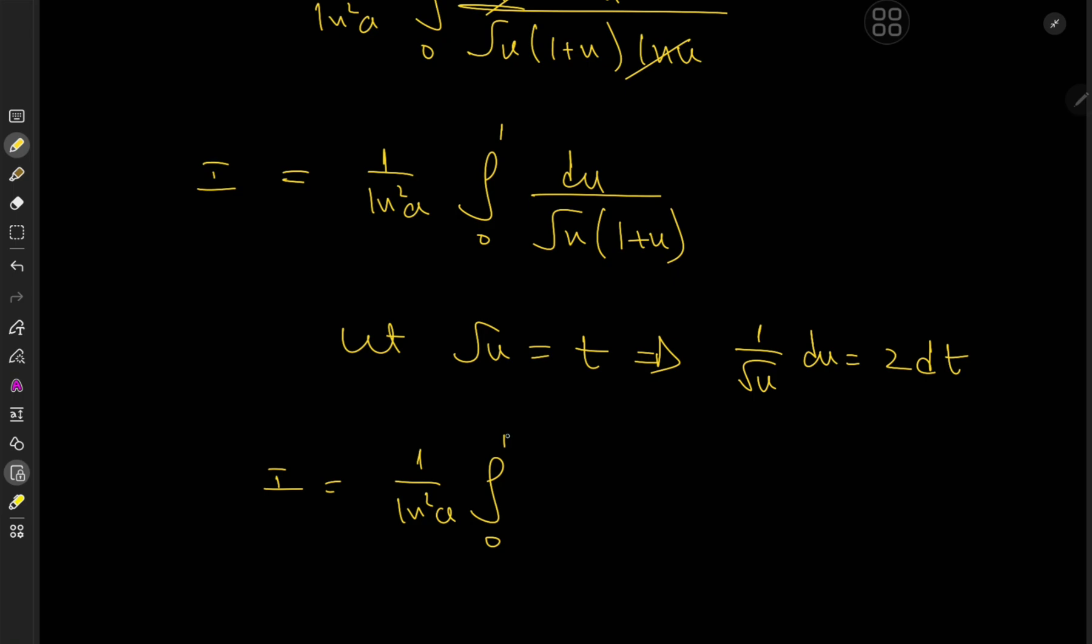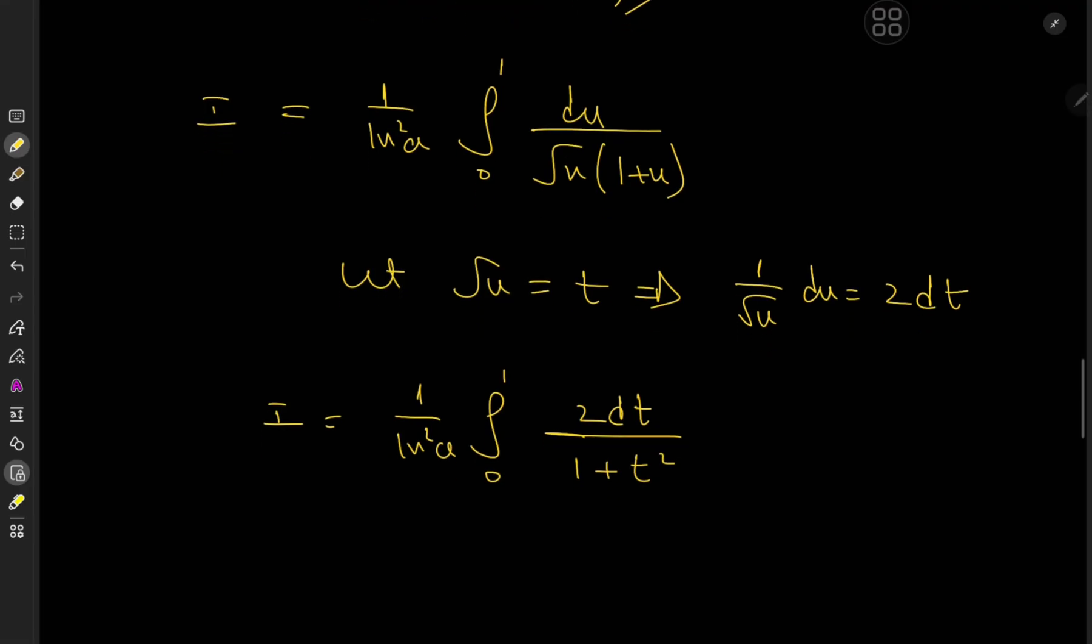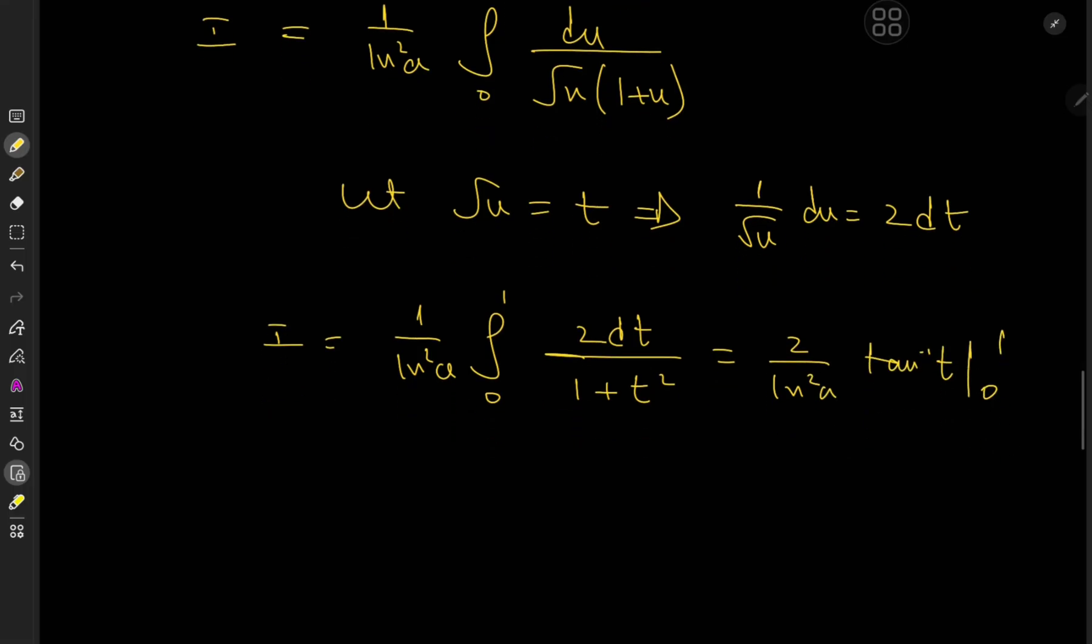And of course, the du over root u turns into 2 times dt. And we have (1 + t squared), which does look pretty damn familiar. I mean, this looks like an arctangent. So we have 2 over log squared a times the arctangent of t, with the limits being 0 and 1.